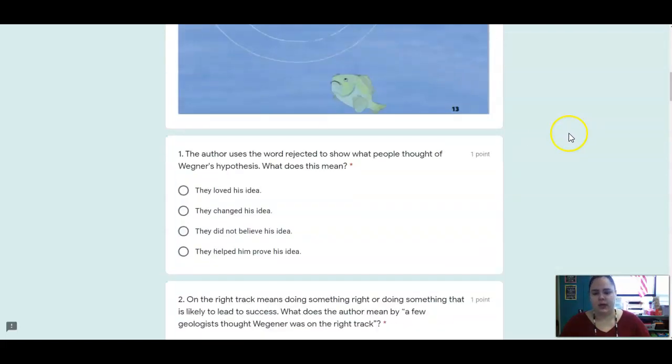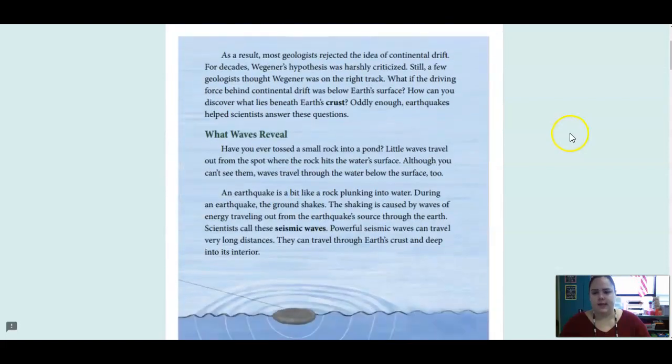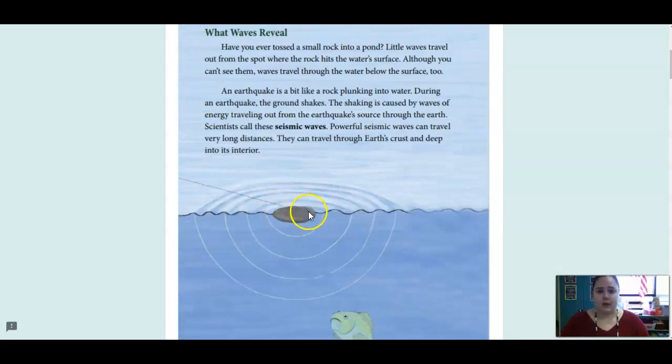So here's the first page we're going to be looking at. It says, as a result, most geologists rejected the idea of continental drift. For decades, Wegener's hypothesis was harshly criticized. Still, a few geologists thought Wegener was on the right track. What if the driving force behind continental drift was below Earth's surface? How can you discover what lies beneath Earth's crust? Oddly enough, earthquakes helped scientists answer these questions. And then this section talked about those seismic waves and how they were similar to the rock being dropped in the water, and those waves get pushed off as a result.